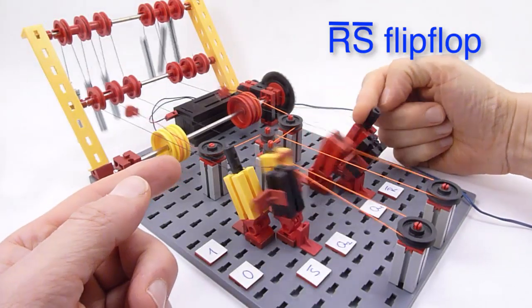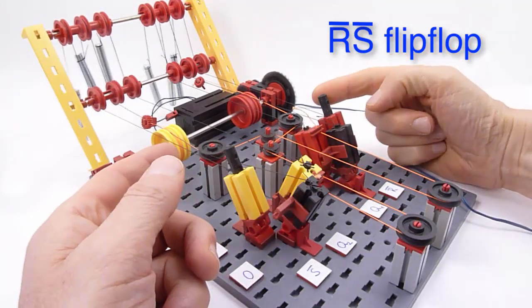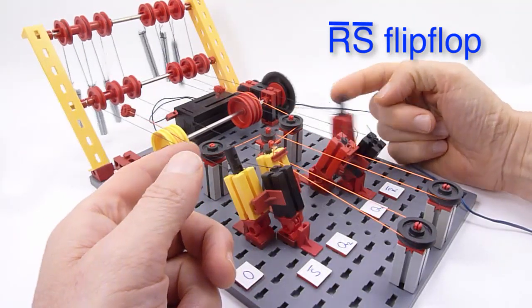We now come to the simplest form of computer memory, an R-bar, S-bar flip-flop.